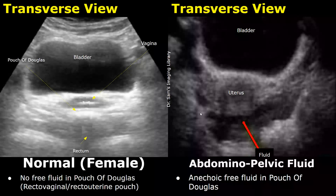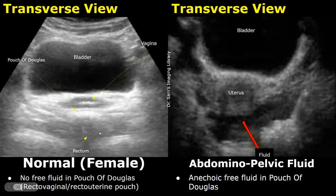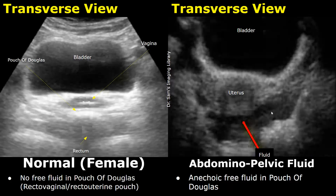The pelvic region is usually scanned in a transverse view to check for free fluid. In a normal image of a female patient, the anechoic fluid structure is the bladder. This is the vagina, and down here is the rectum. The space between the uterus or vagina and the rectum is known as the pouch of Douglas, or rectovaginal or recto-uterine pouch. Free fluid is usually found at this location — in this image we can see a significant amount of free fluid in the pouch of Douglas, seen behind the uterus as an anechoic fluid collection with some complexity.